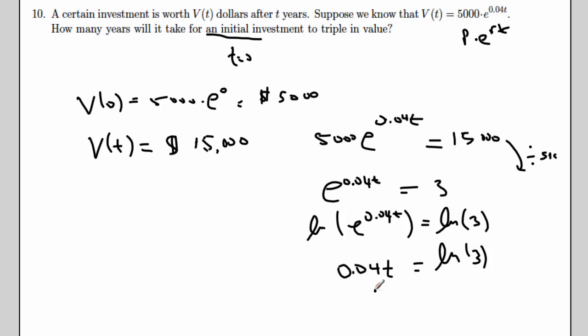And so the solution then, my value of t that I was looking for, is just the natural log of 3 divided by 0.04. In this case, you'll find that it'll take a while. At 4% interest rate, it's going to take 20-some years for an investment to triple.